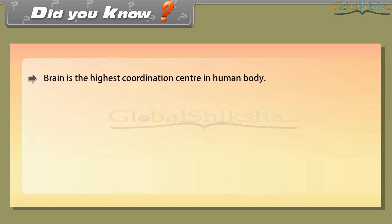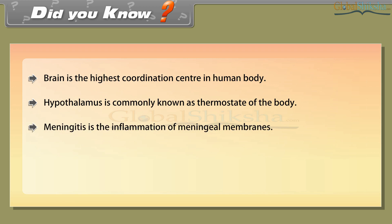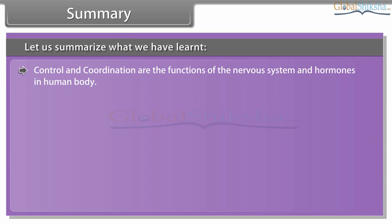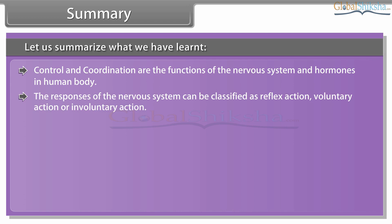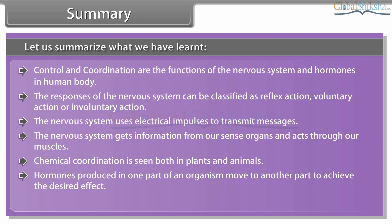Some interesting facts: the brain is the highest coordination centre in the human body; the hypothalamus is commonly known as the thermostat of the body; meningitis is the inflammation of meningeal membranes; and the cerebellum is also known as the 'little brain.' In summary, control and coordination are the functions of the nervous system and hormones. The nervous system uses electrical impulses to transmit messages, gets information from sense organs, and acts through muscles. Chemical coordination is seen in both plants and animals. Hormones produced in one part of an organism move to another part to achieve the desired effect, and a feedback mechanism regulates the action of hormones.